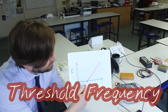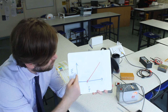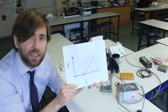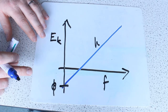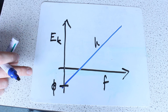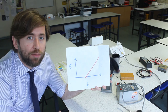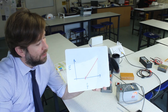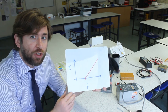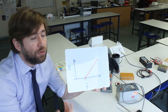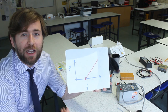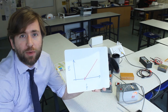After the threshold frequency, the kinetic energy of those photoelectrons increases linearly. This leads me to an experiment where we can actually measure Planck's constant, and in which we'll also be able to measure the minimum amount of energy needed to release an electron from a metal.